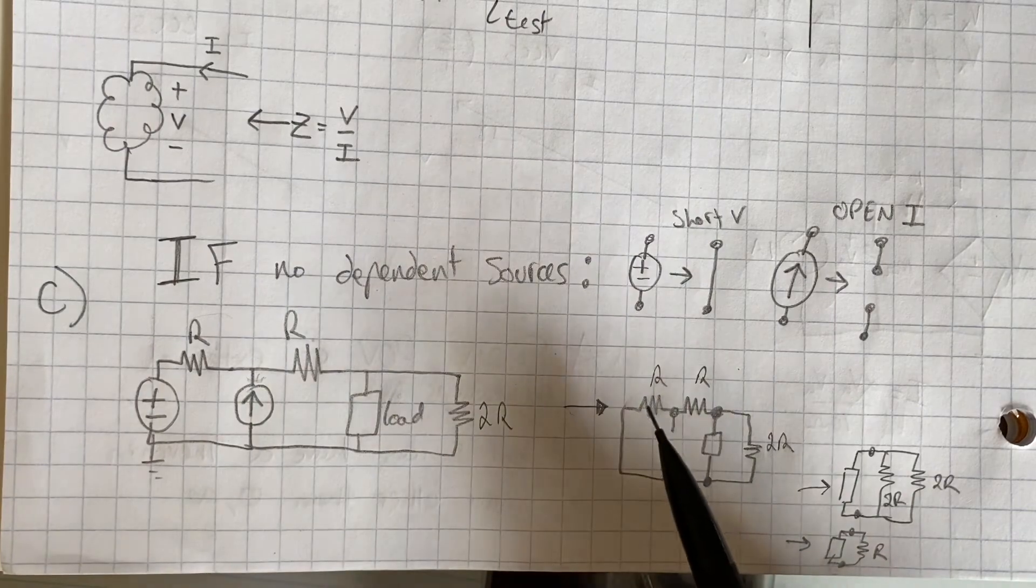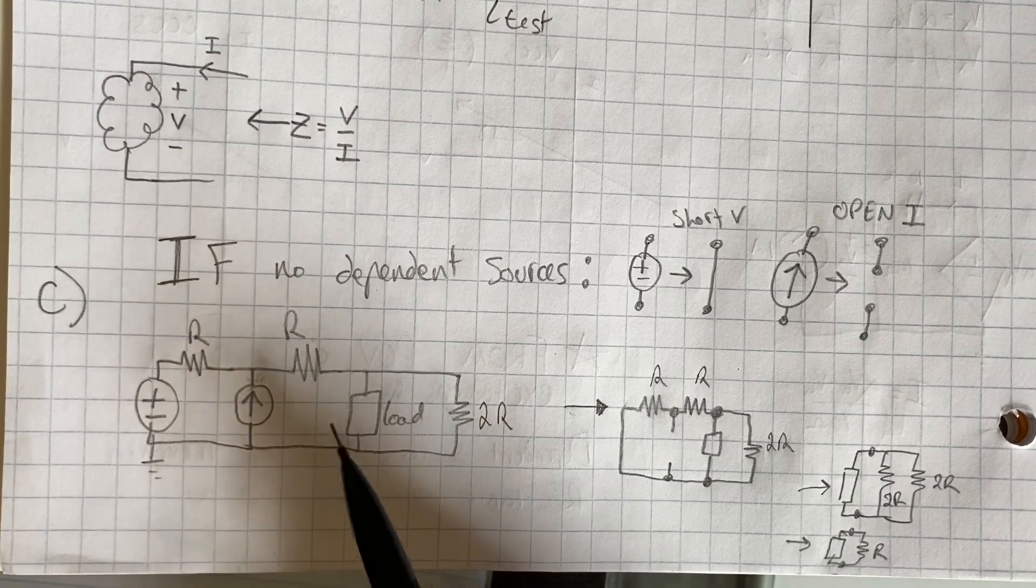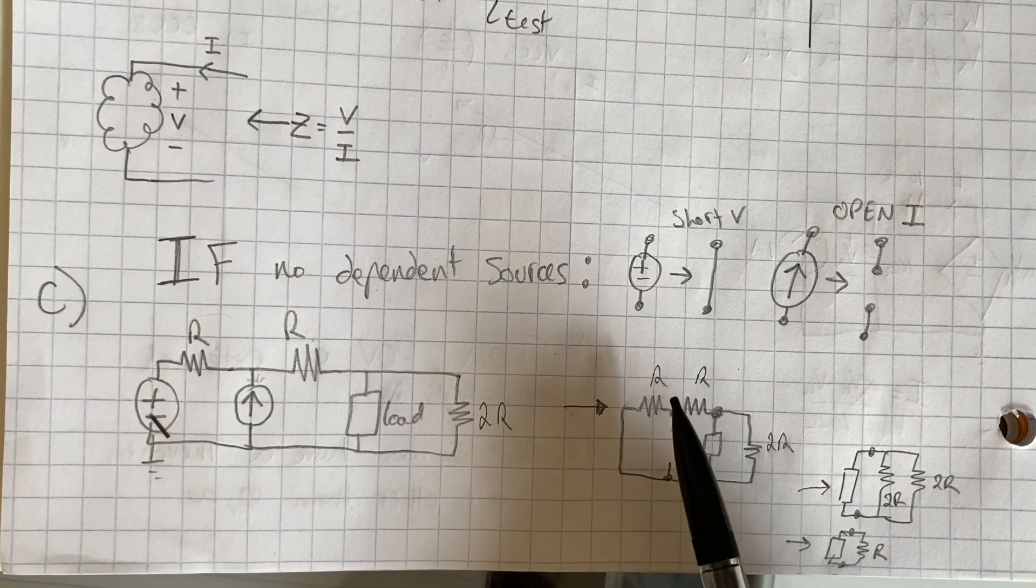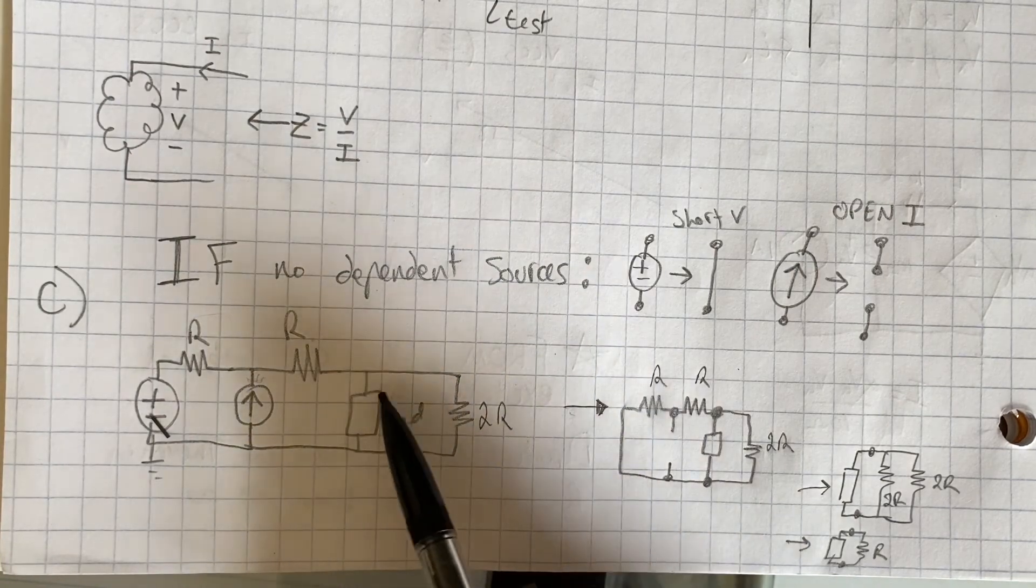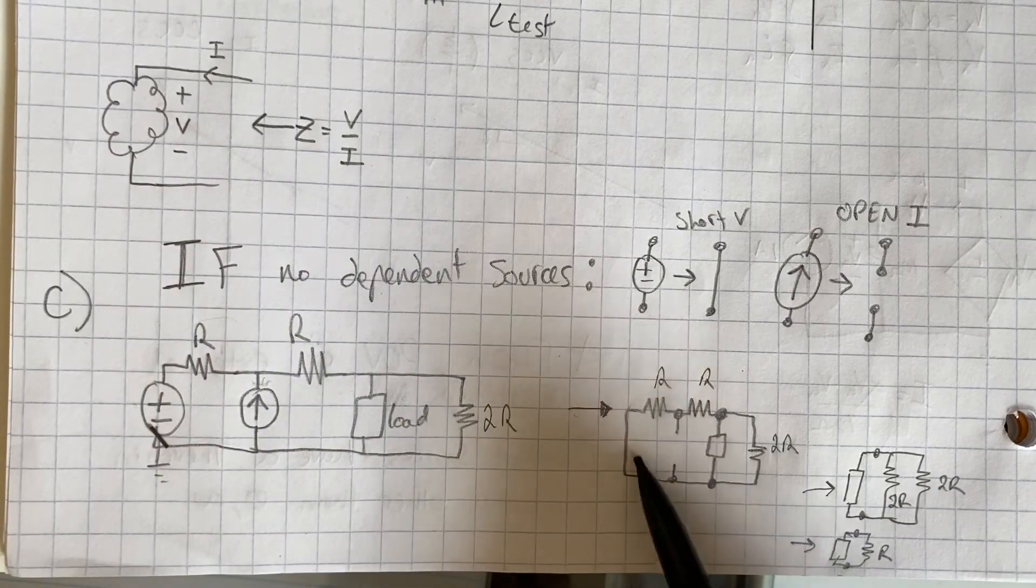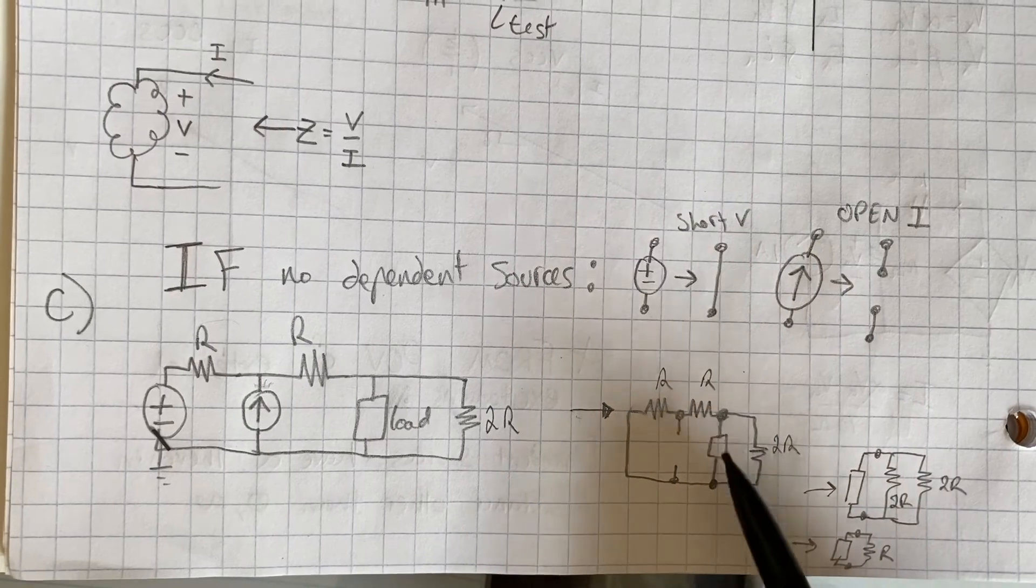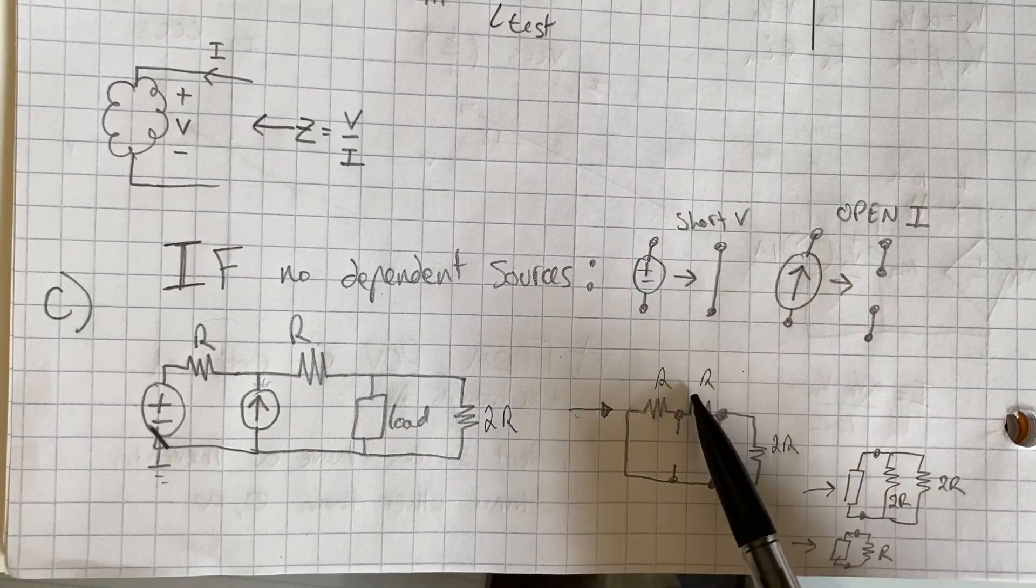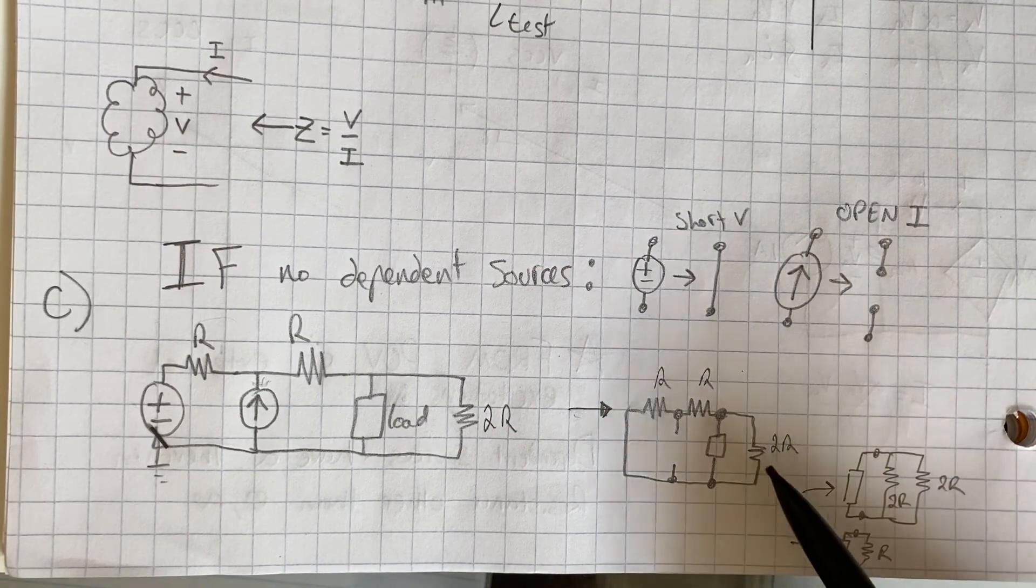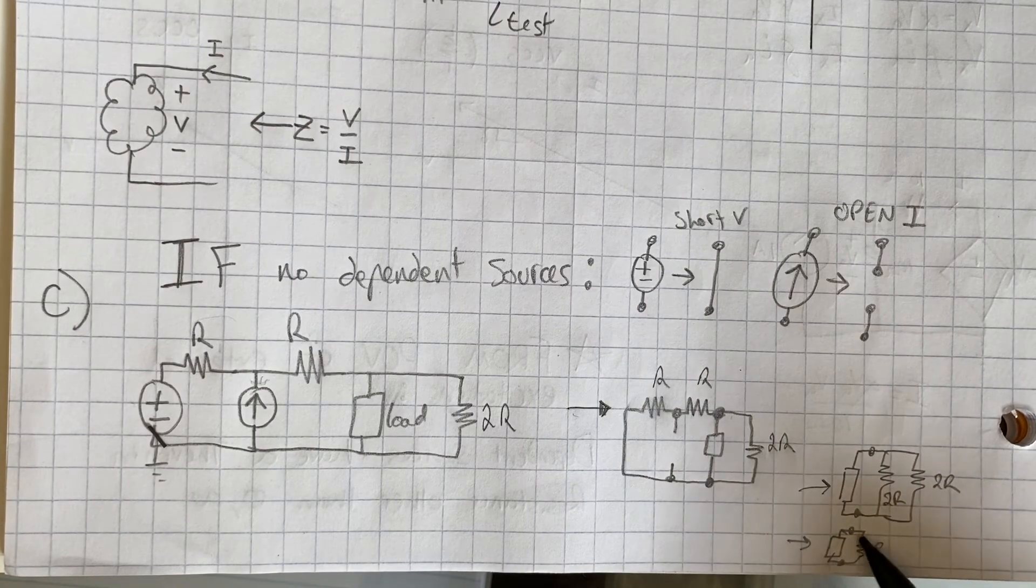And so if we use this method of finding the Thevenin impedance, here we'll short out the source. We'll open up this current source. And we're looking at the impedance seen by these load terminals. So now we have this, R, R, and 2R. Now again, seen by this, we have these two R's combined into 2R. And then that's in parallel as far as this load is concerned with another 2R.